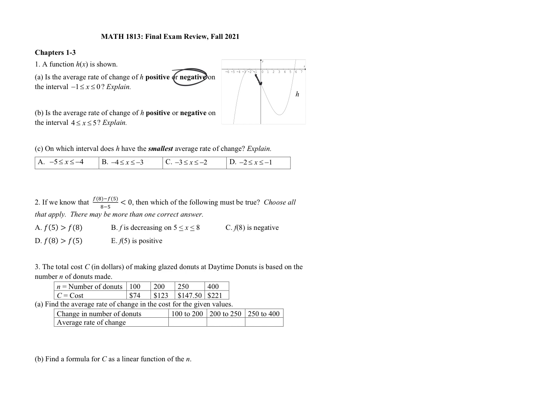What about four to five? Four is going to be about right here, five is going to be about right here, and this line is going upwards — it's increasing, so it's going to have a positive slope or a positive average rate of change.